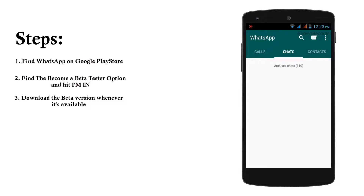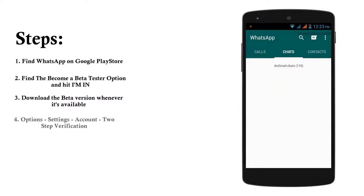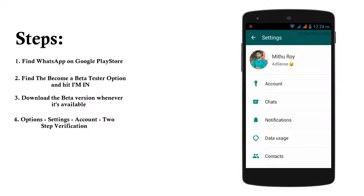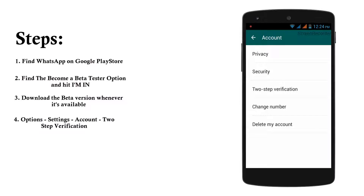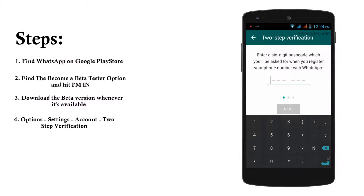I've opened up my WhatsApp. I've archived all the chats because I don't want you to see them. I'm going to click on the options menu and go to Settings. In the Settings option you can find 'Account.' Go to the Account option and if you have installed the beta version of WhatsApp, you will find 'Two-step verification' in here. Let's go ahead and click on it. It says for added security you have to enable two-step verification. I click Enable and select a six-digit passcode: one, two, three, four, five, six.